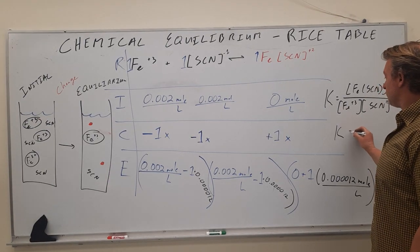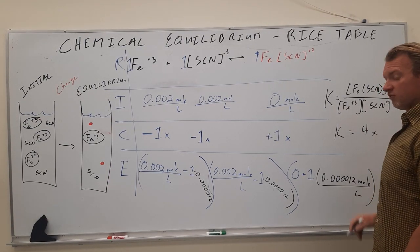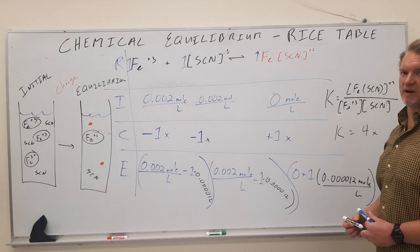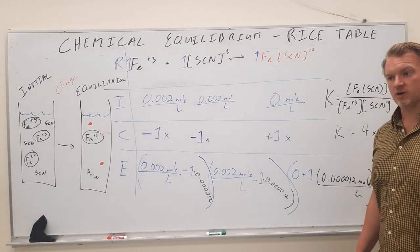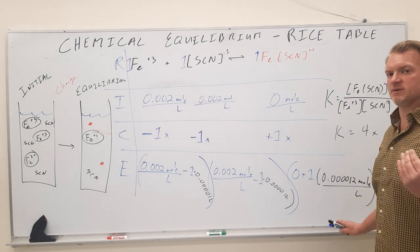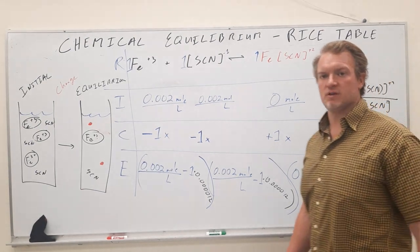Now this should be done four times for each of the four solutions that you ran in this lab experiment. And these K values should all be very similar to each other. They're not going to be identical, but they should be similar values. I hope this helps. Thank you.